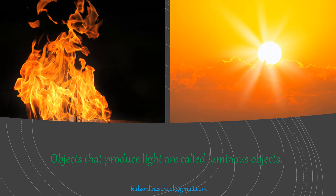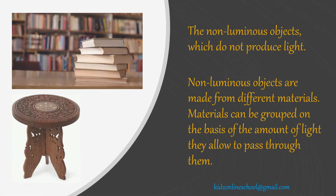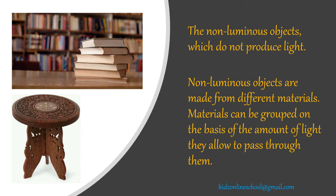Objects that produce light are called luminous objects. The non-luminous objects do not produce light. Non-luminous objects are made from different materials. Materials can be grouped on the basis of the amount of light they allow to pass through them.